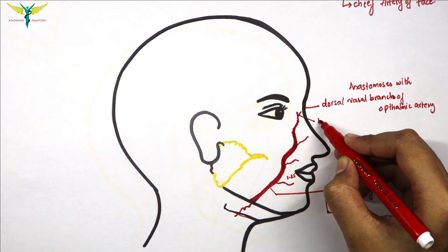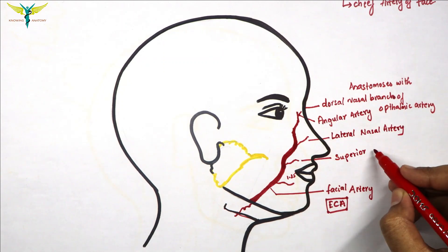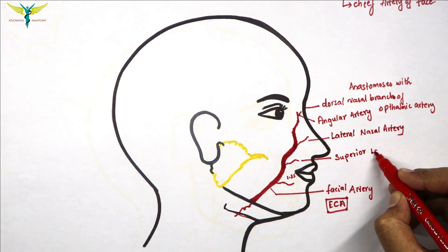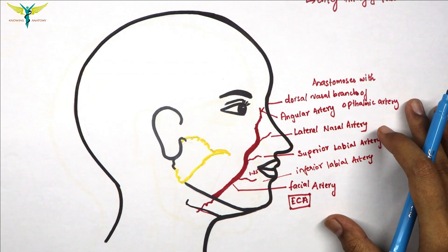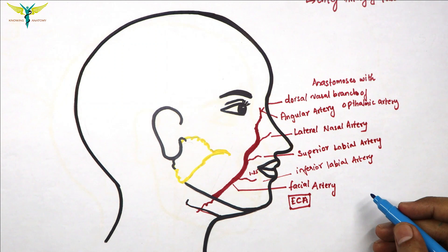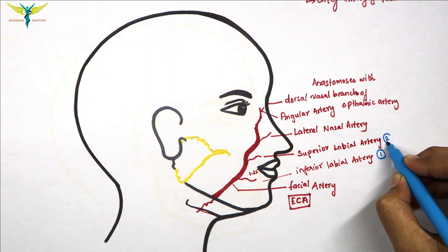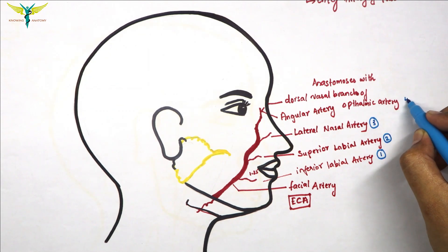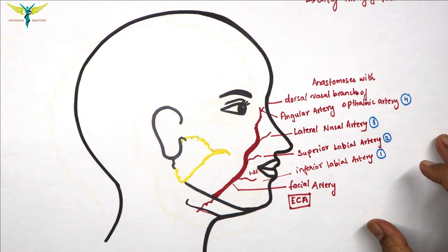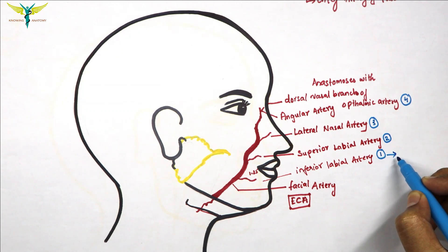So, to summarize: the angular artery, the lateral nasal artery, the superior labial artery, and the inferior labial artery are the branches of the facial artery. The terminal branch is the angular artery.